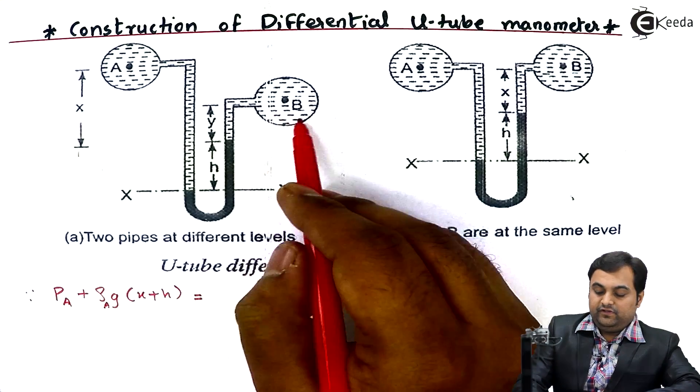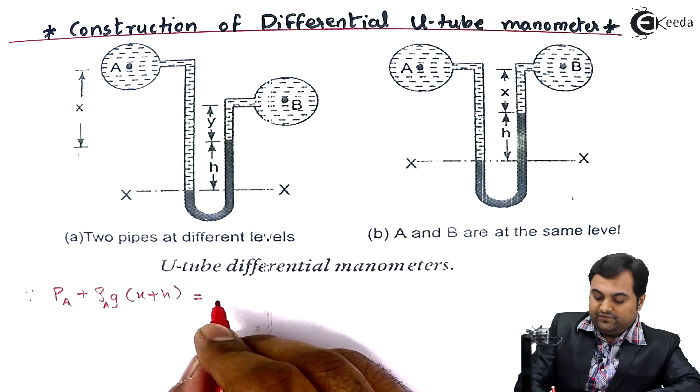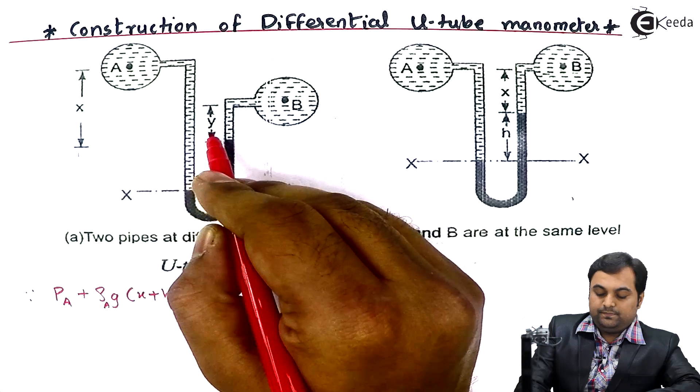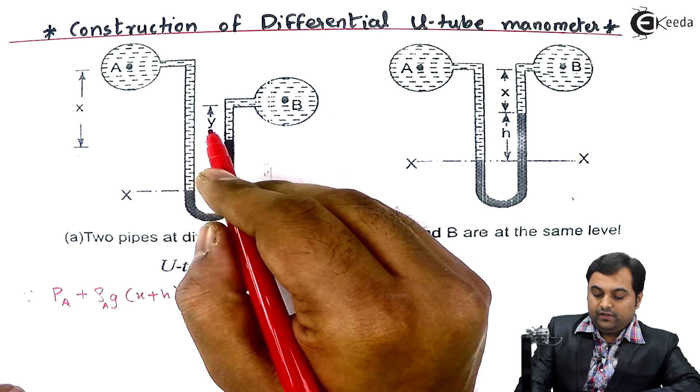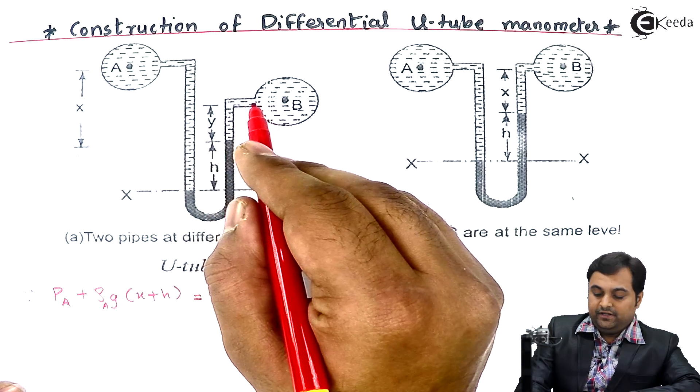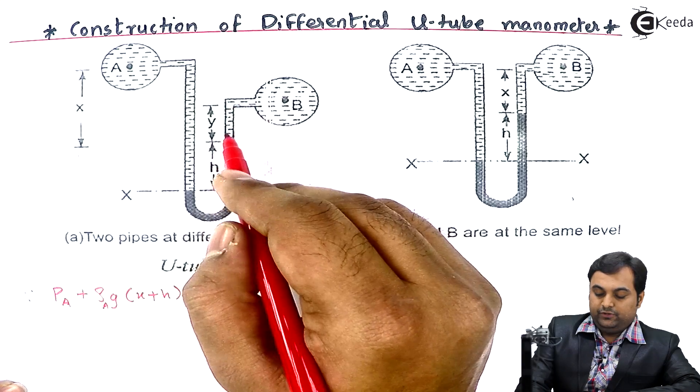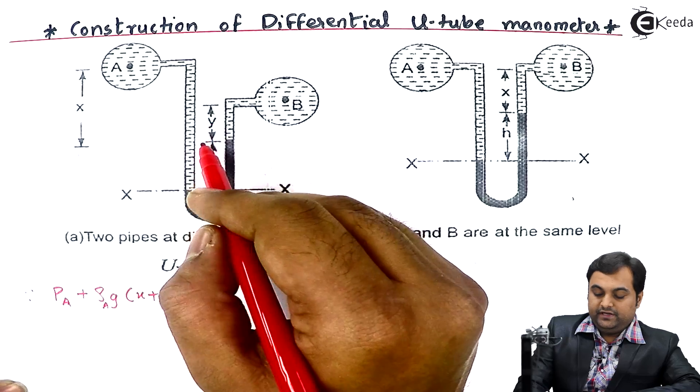For the right limb, I can write: we have pressure P_B of the pipeline which we want to measure. Next there is height H plus Y - pressure is exerted by mercury as well as pressure exerted by the fluid. So first I'll consider the fluid, its height is Y.